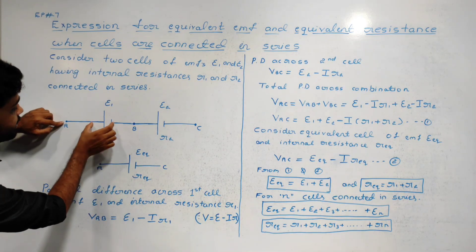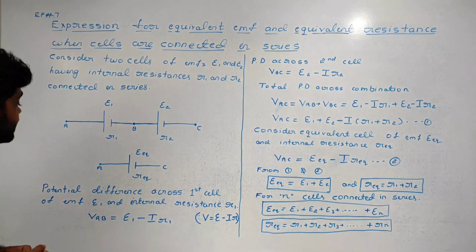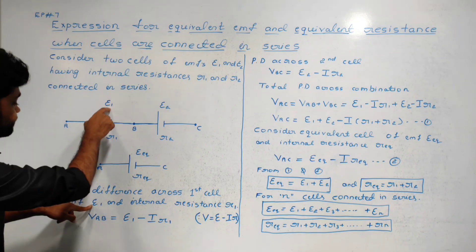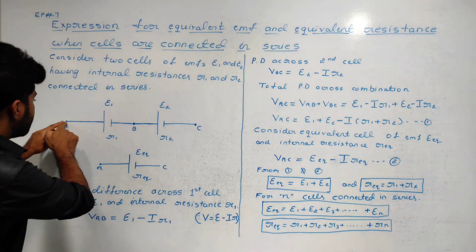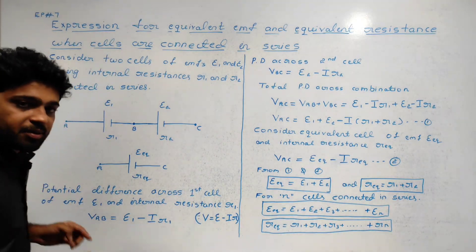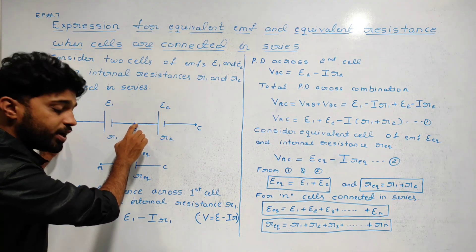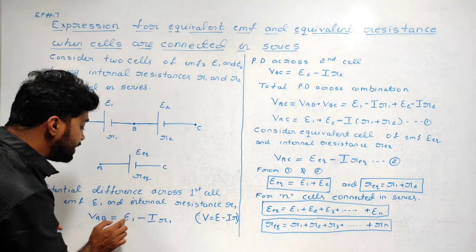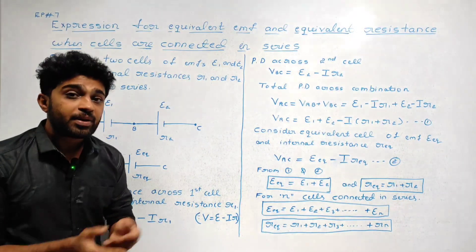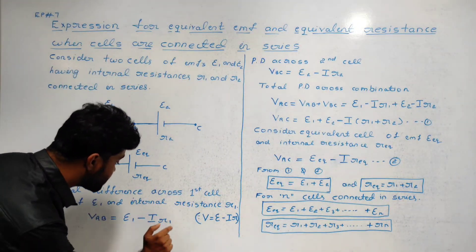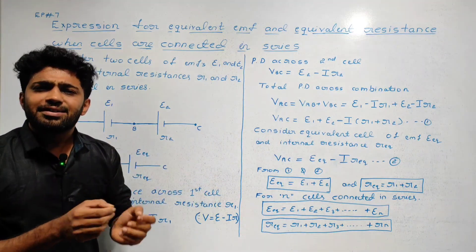Considering points A and B, the potential difference across the first cell of EMF E1 and internal resistance R1 is VAB. So the equation for VAB is equal to E1 minus IR1.